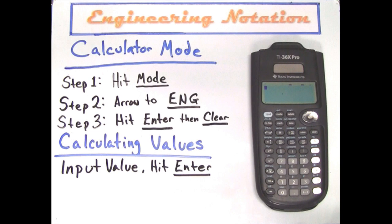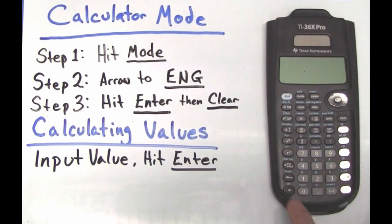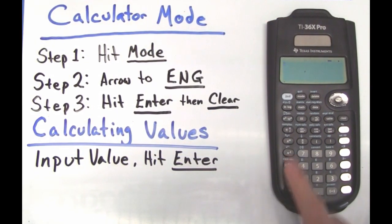We will now set up our calculator to operate in engineering notation mode. To begin, please turn your calculator on and we will simply follow these steps. Step 1. Hit the mode button.